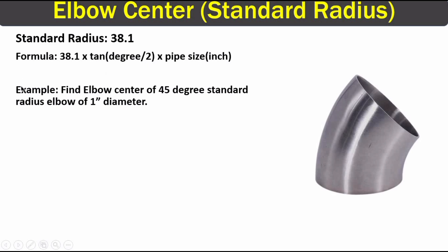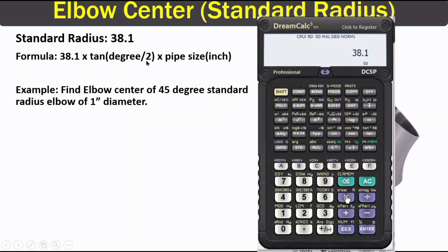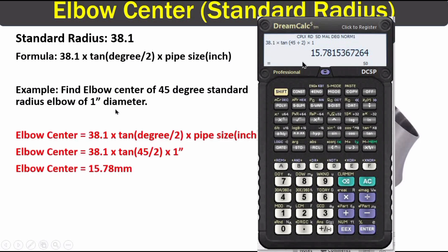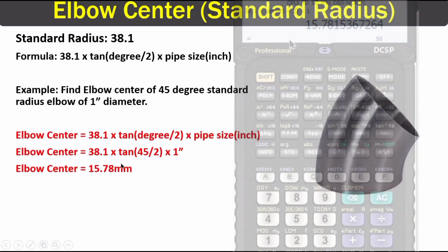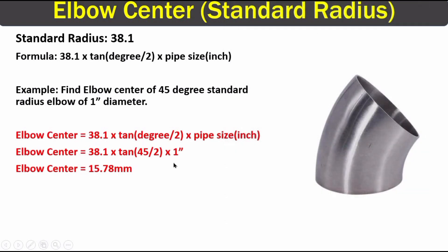Now let's solve a problem. Here is a case where we have a 45 degree standard radius elbow of diameter 1 inch. Using the formula on the calculator: 38.1 multiplied by 10, into 45 divided by 2, multiplied by 1 inch. We get 15.78 millimeters as the elbow center. So this is our answer.